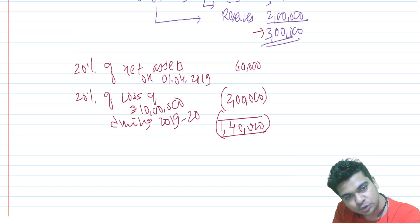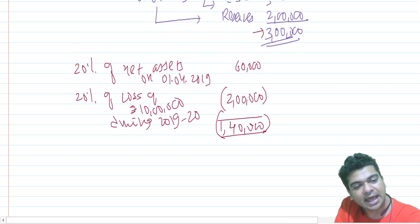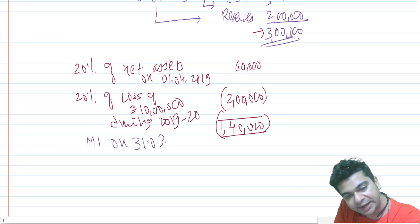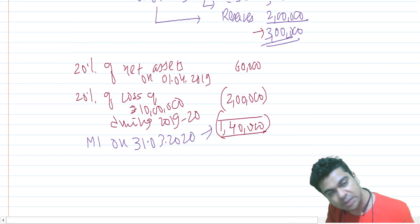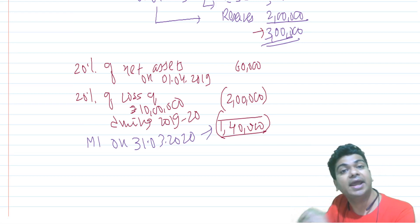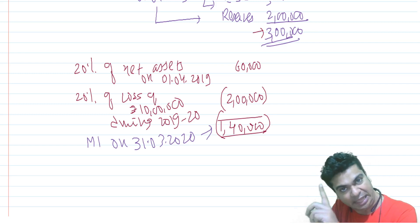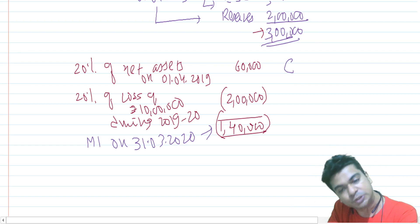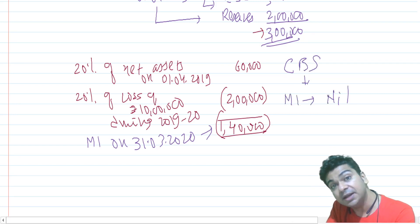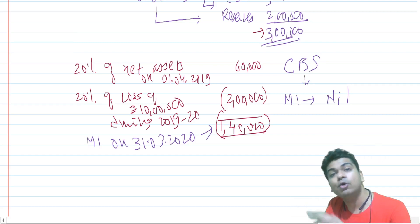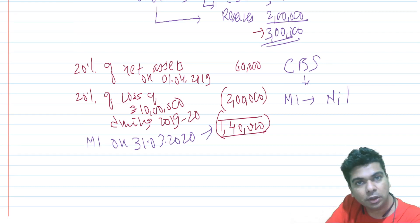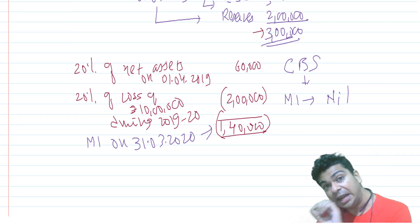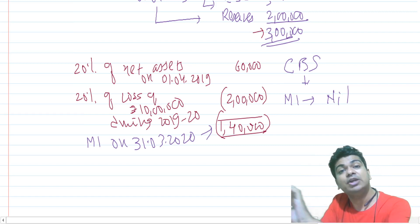So the minority interest on 31st March 2020 is negative 1 lakh 40,000. What is the treatment under AS 21? AS 21 says that negative minority interest should be reported at nil value in the consolidated balance sheet. You will show minority interest at zero — you cannot show a negative minority interest in the balance sheet.